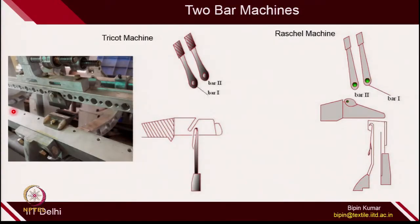Here are 2 technologies that are quite popular in 2 bar machines. First are tricot machines, which are widely popular for agronets, simple mesh fabrics, and mosquito net fabrics — single bed machines are very popular. This machine was also demonstrated in week number 8, where we showed how to fix the sinker, bar, and needle as a lab demonstration.